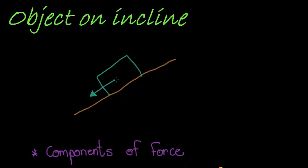We know that when we have an object on an incline that is steep enough, that object is going to start to move down - not just move down, but actually accelerate downwards. The longer we leave it, the faster it will travel down, which means that it is accelerating down the slope, which means that this acceleration is caused by a resultant force.